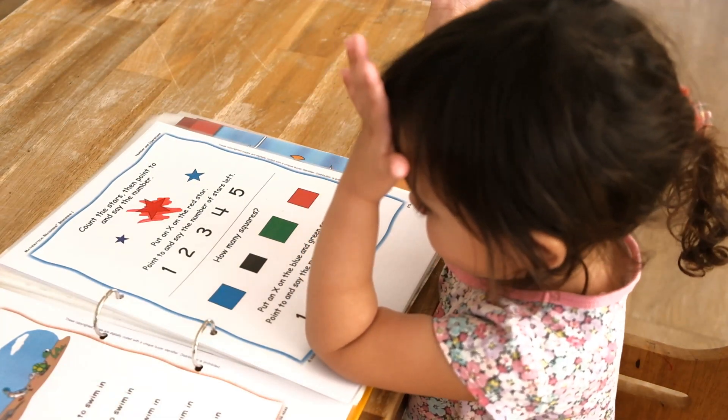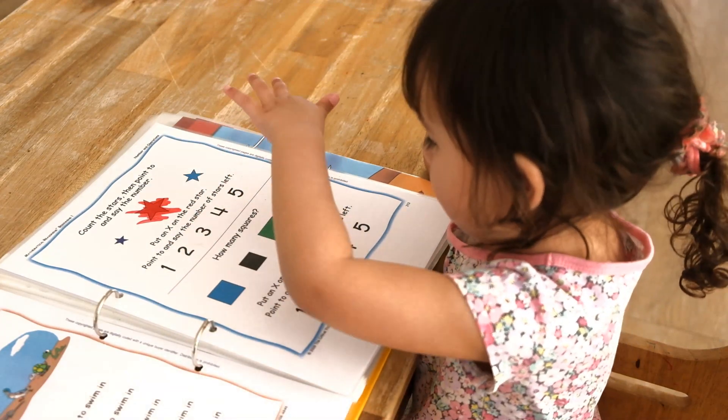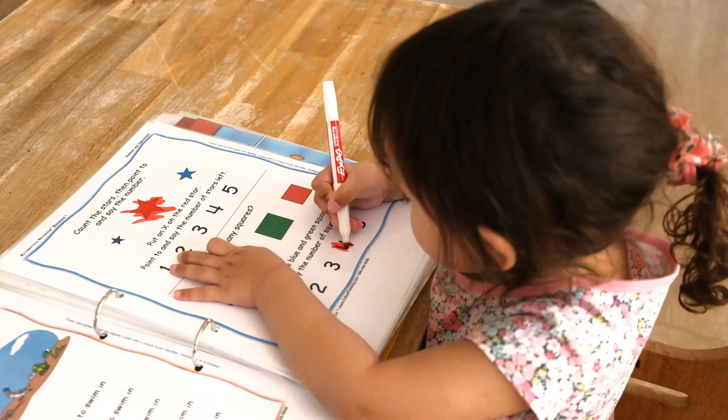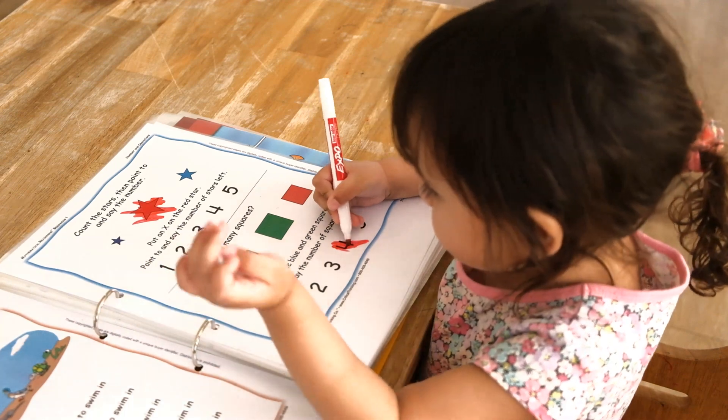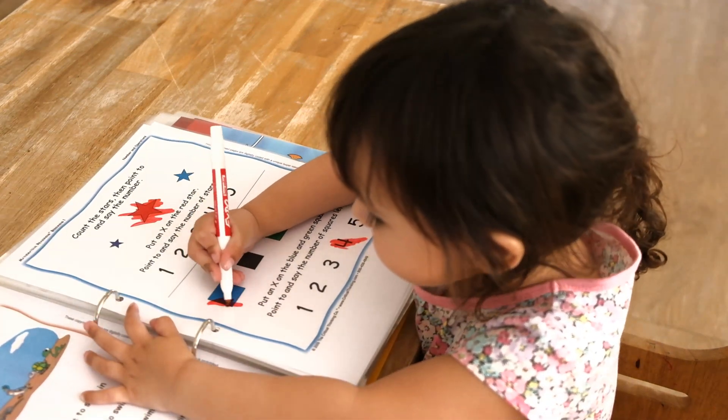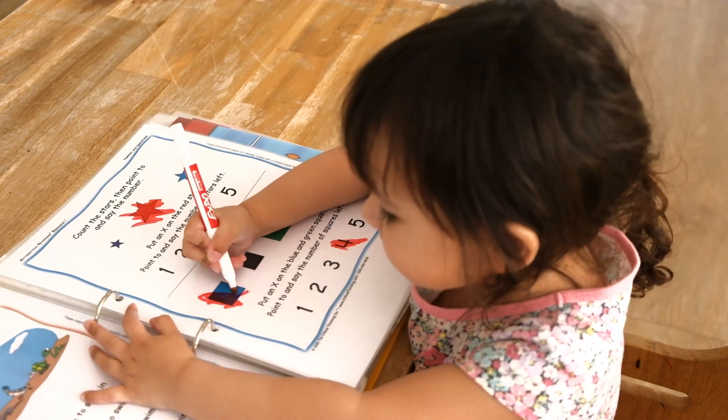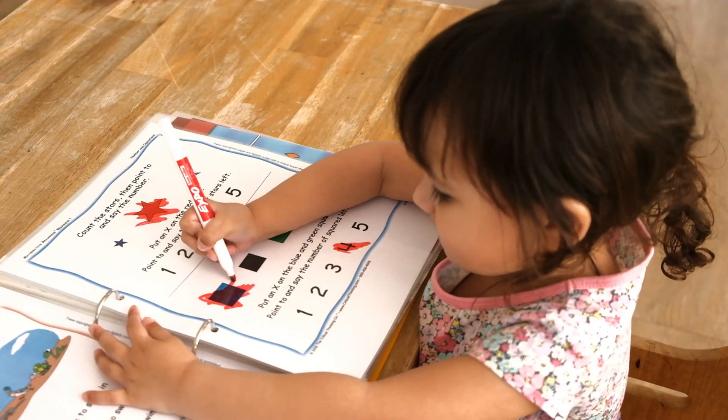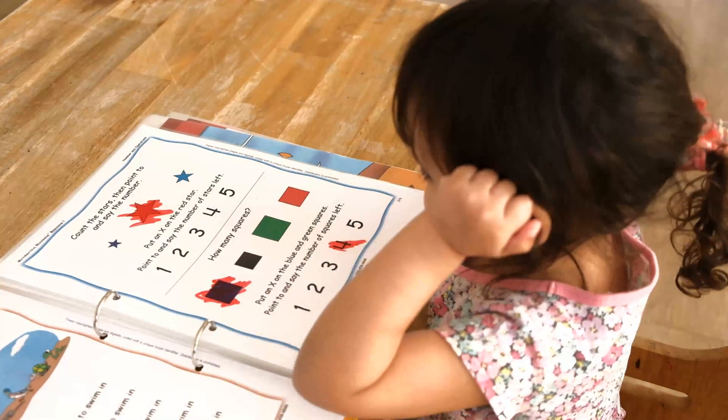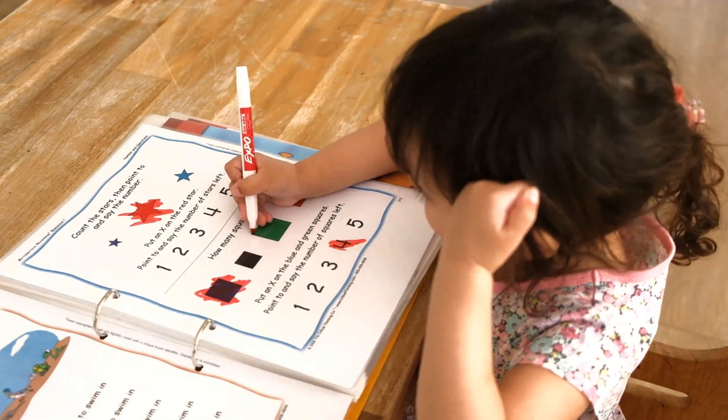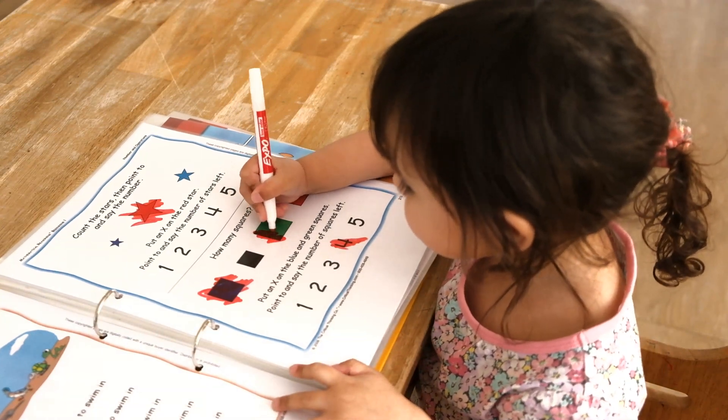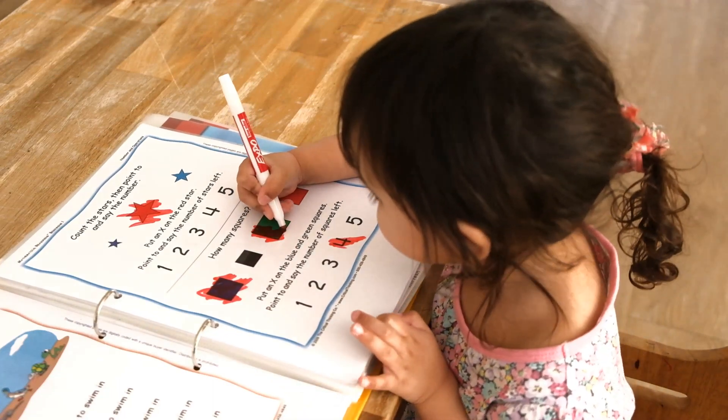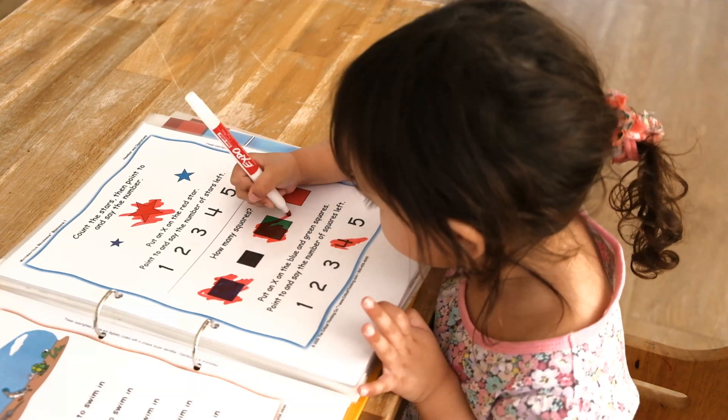Okay. How many squares do we have? One, two, three, four. That's right. Can you find number four? Can you circle number four? Yes. Can you also circle blue and green squares? Can you circle blue and green squares? Yes. This color is not the same. So close.